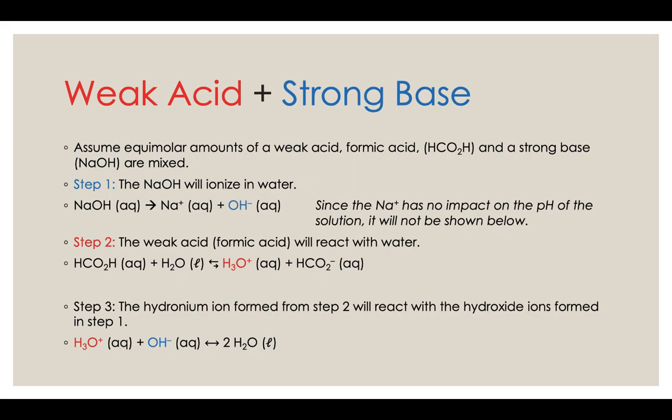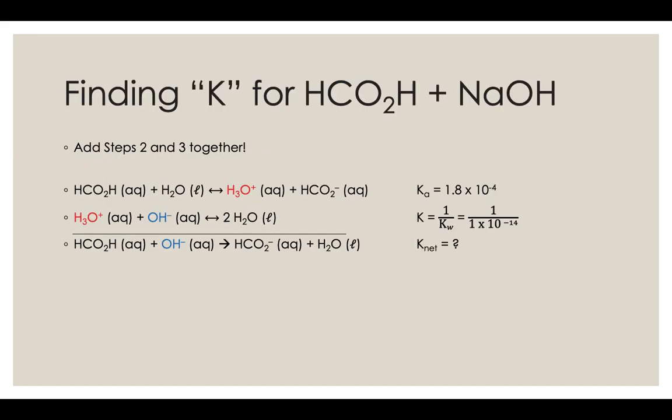Well, when you put that acid and base together, the hydroxide from step 1 can react with the hydronium in step 2 and make some water. Here's that Hess's law way of thinking about these reactions. So if you add steps 2 and 3 together, then your hydronium ion cancels out. One of your waters cancel out, and there's your net reaction.